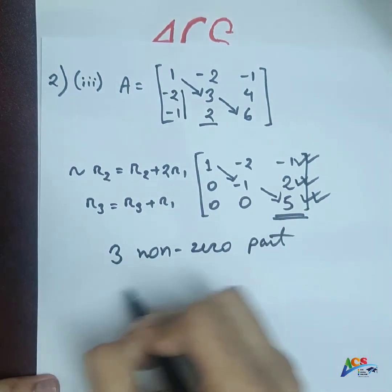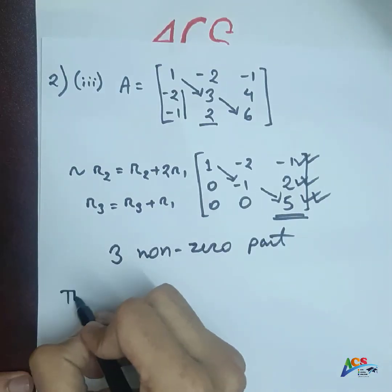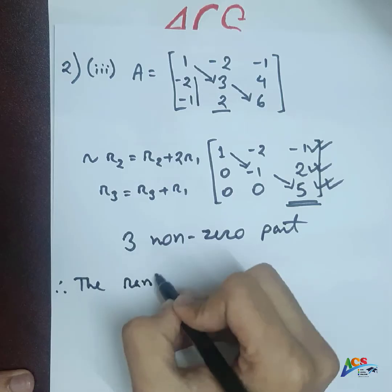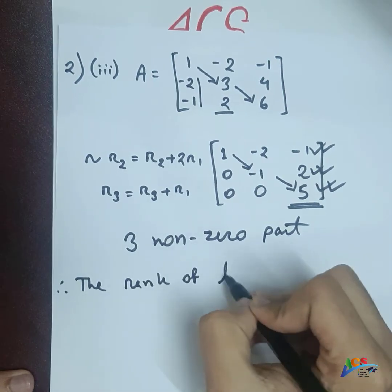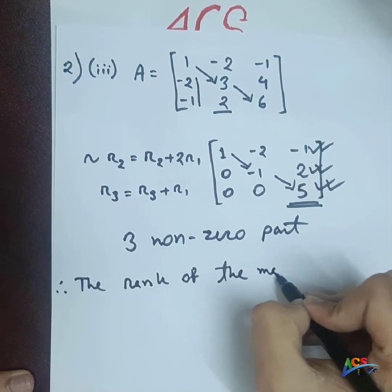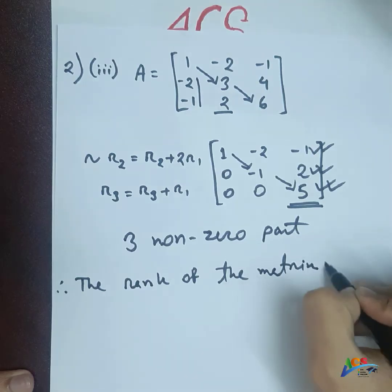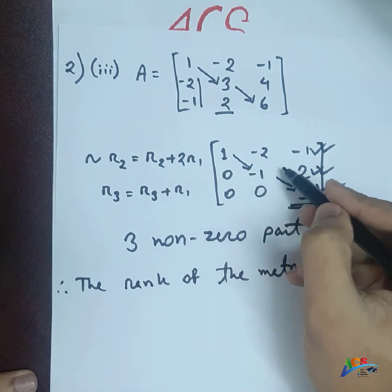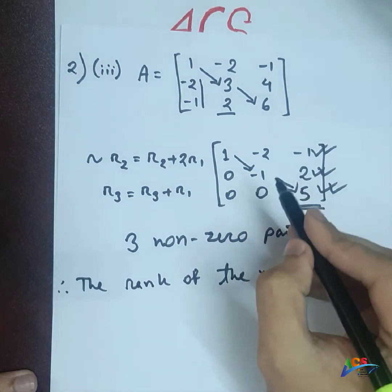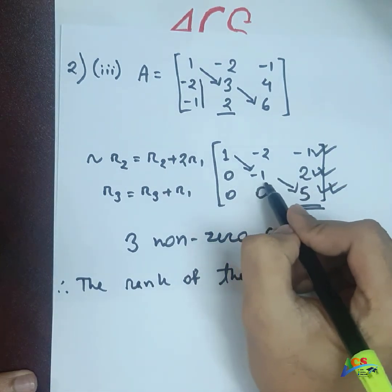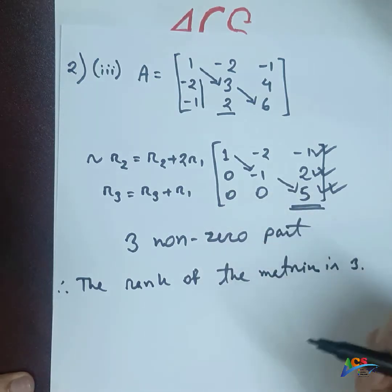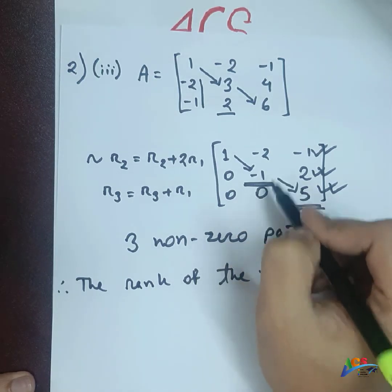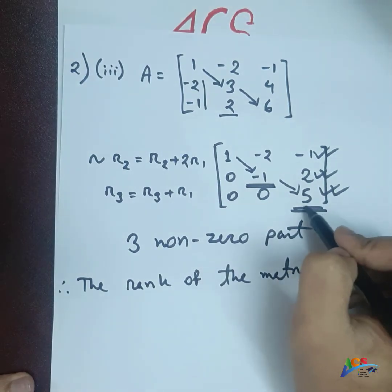So the diagonal-wise result shows all non-zero particles. Therefore the rank of this matrix is 3. Three non-zero rows give us rank = 3. To confirm: diagonal-wise leading diagonal is non-zero throughout, so rank equals 3.